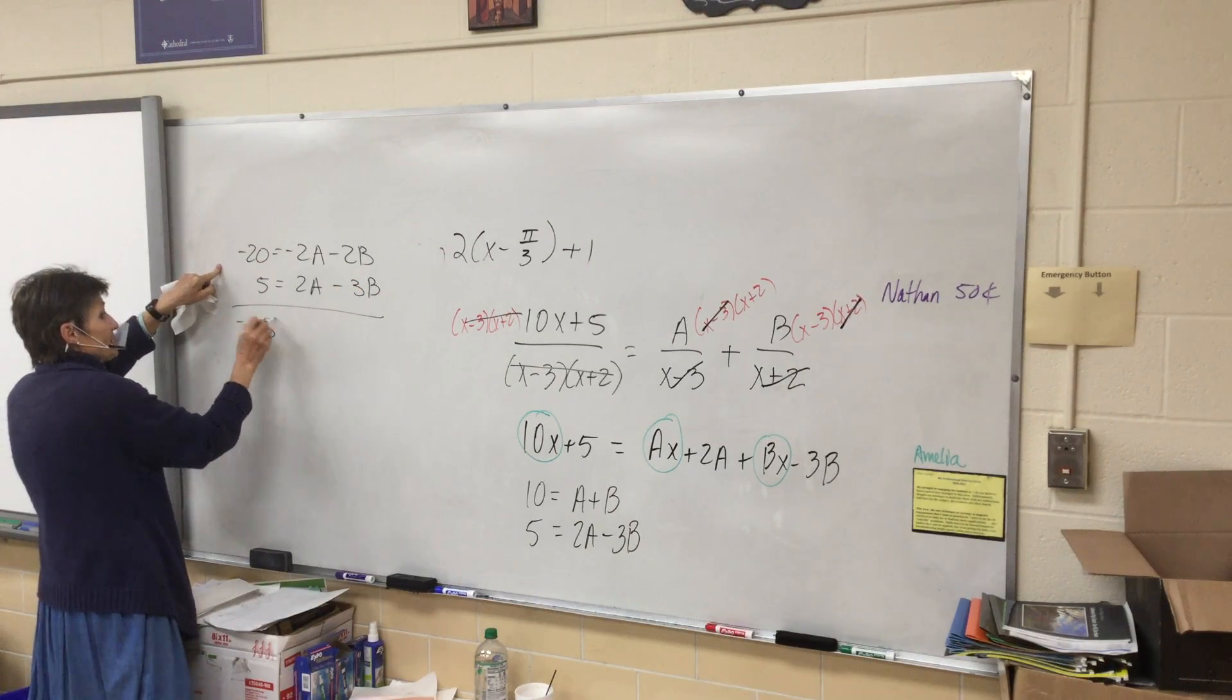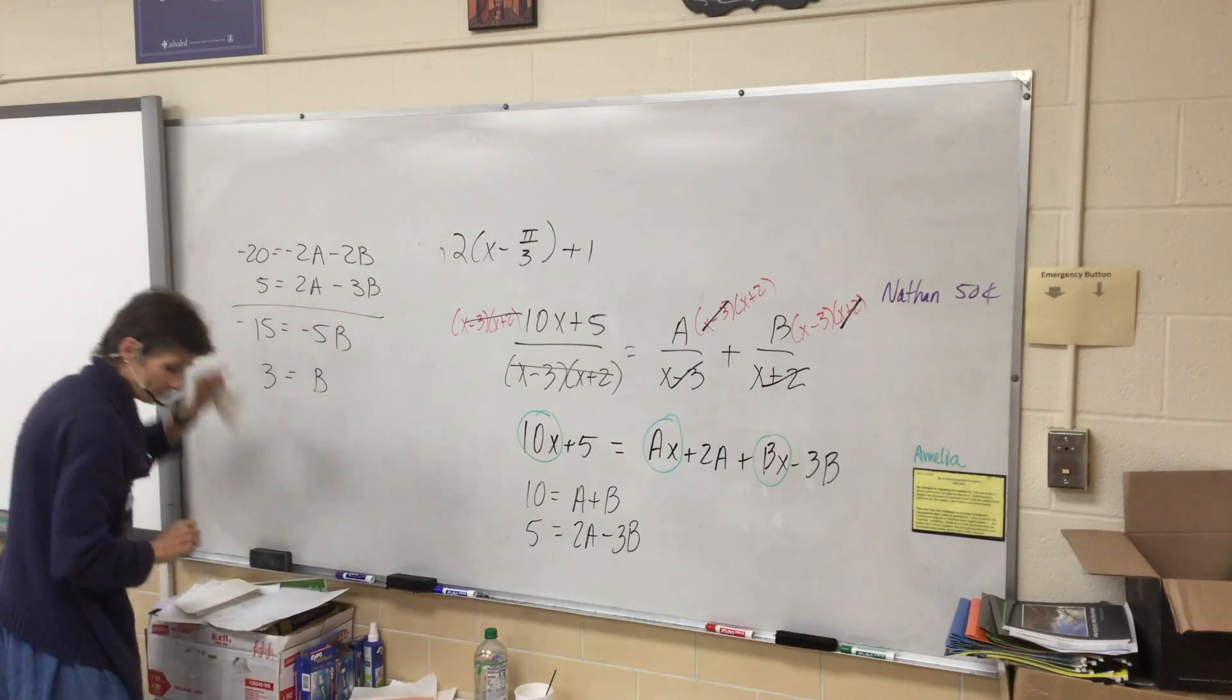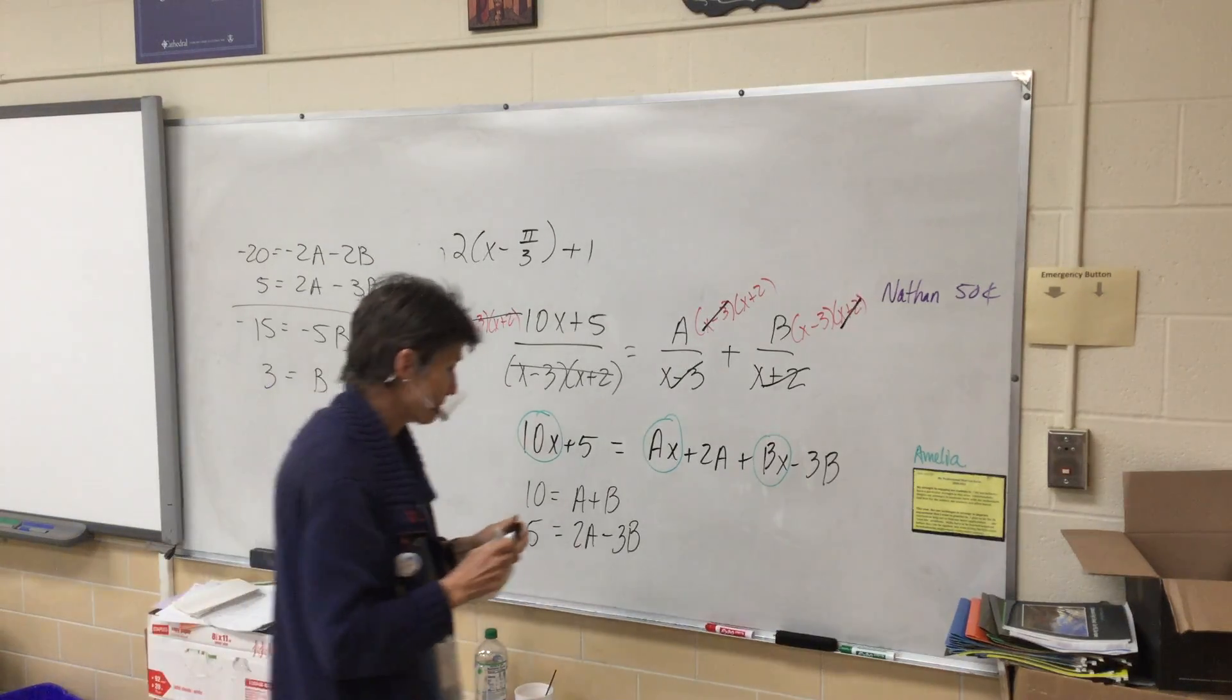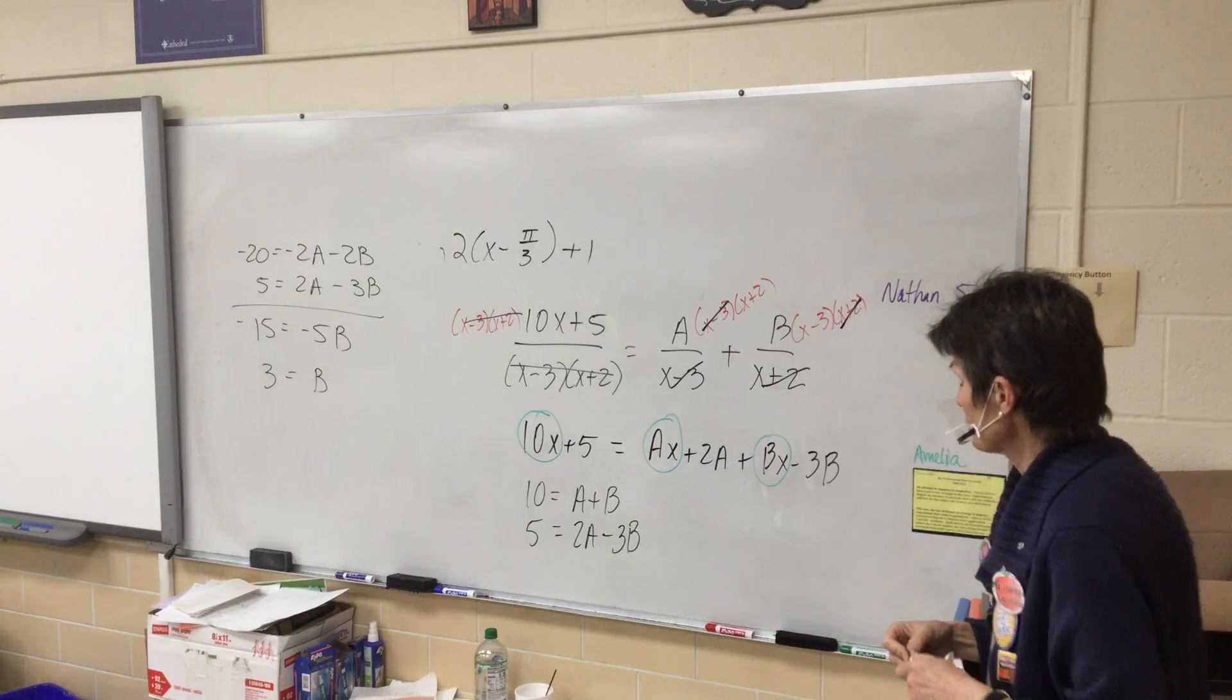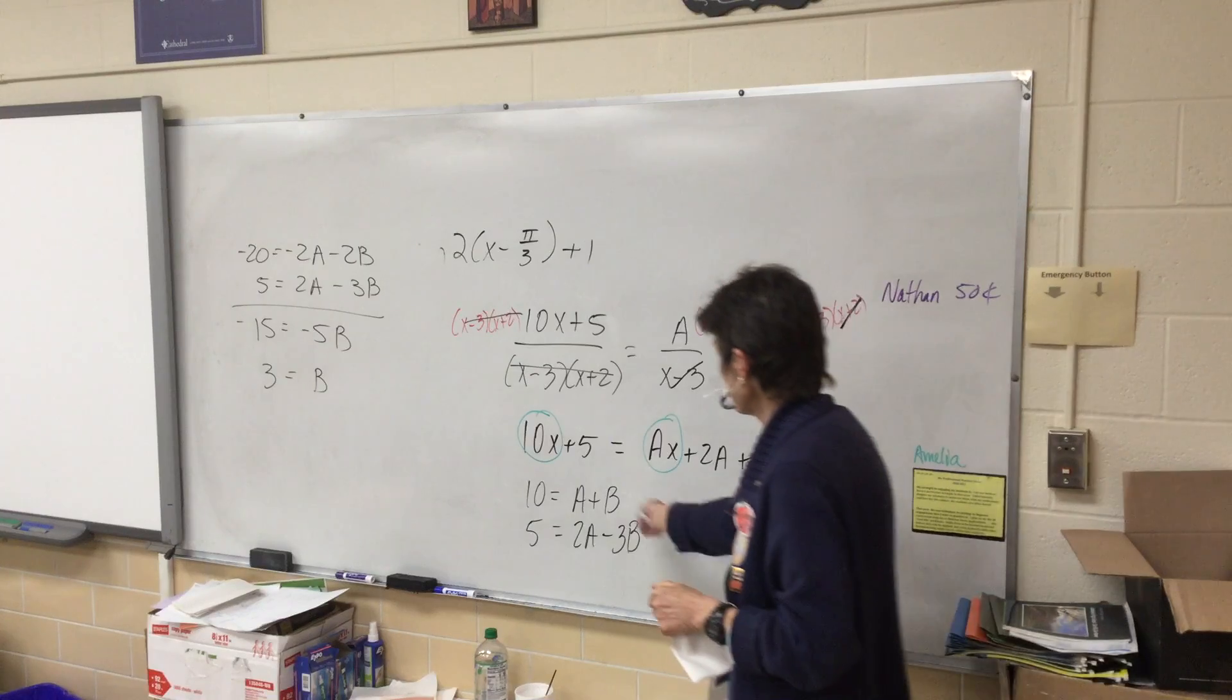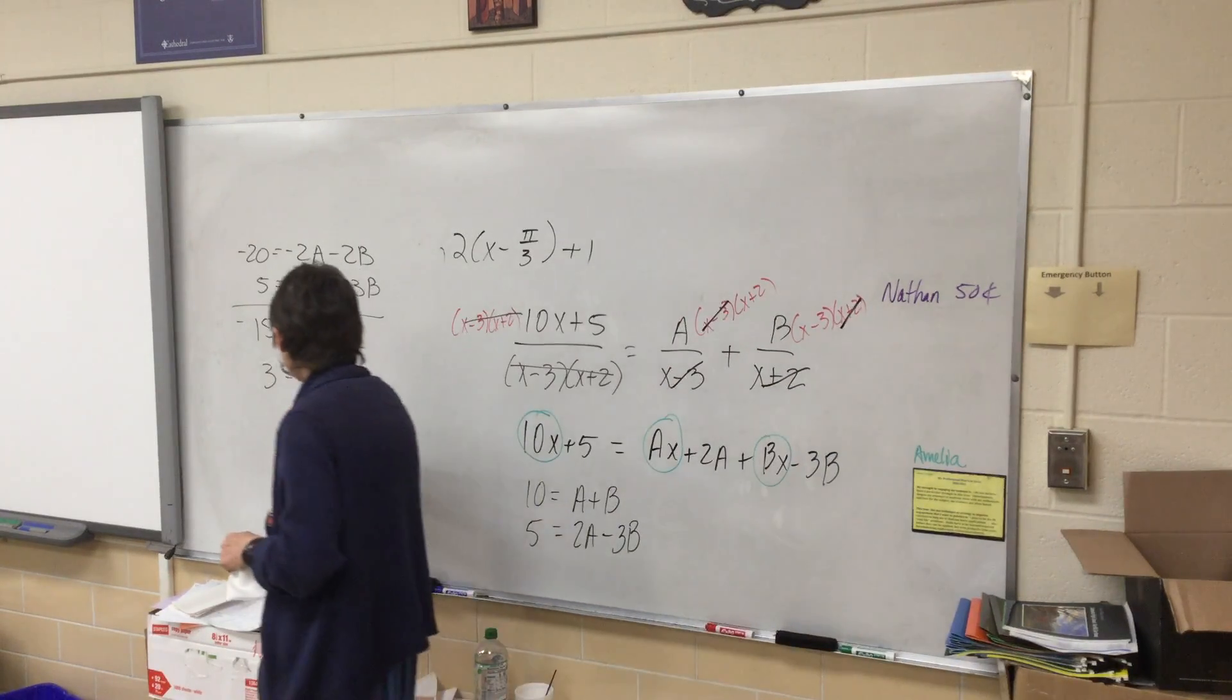And negative 15 equals negative 5B, so B is 3. I eliminated, you can do something else if you want. So what do I do once I find B is 3? Plug it back in somewhere. So if I put in B is 3, it looks like A has to be 7.